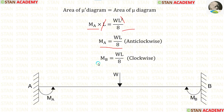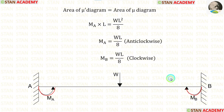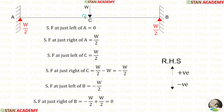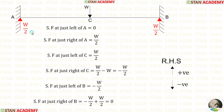We know that MA and MB will have the same value. MA will be acting in the anti-clockwise direction and MB will be acting in the clockwise direction. Now let us calculate the vertical reactions. Since we have symmetrical loading with the point load acting in the center, RA and RB will be equal to W/2.